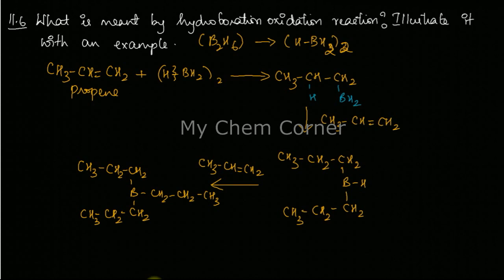Now the last step is going to be reaction with H2O2 and OH minus. When that happens, all the three bonds will break and instead of these CH2s bonding to boron, you will get alcohol. This is going to be three alcoholic groups plus the remaining part is going to form B(OH)3.